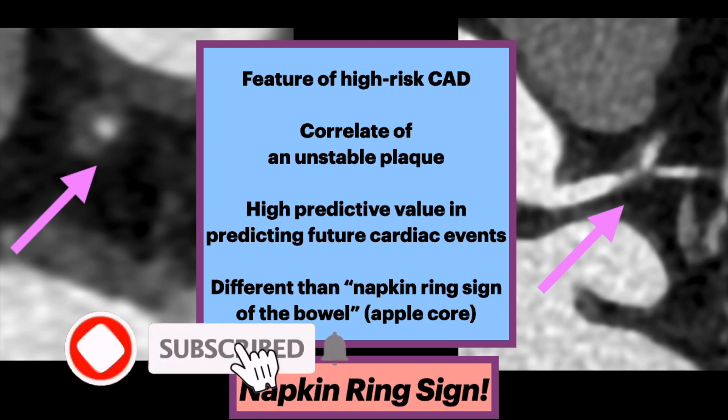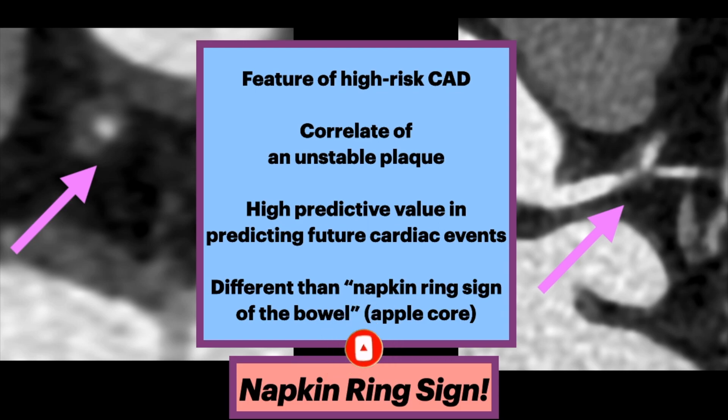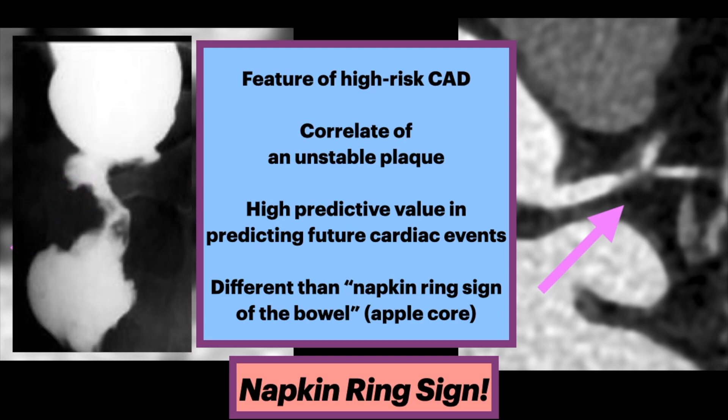It is a correlate of an unstable plaque, and there is high predictive value in predicting future cardiac events. It is different than the napkin ring sign of the bowel, a.k.a. the apple core sign, which signifies cancer.